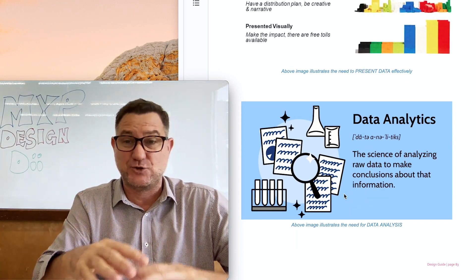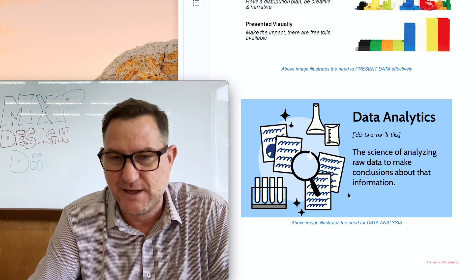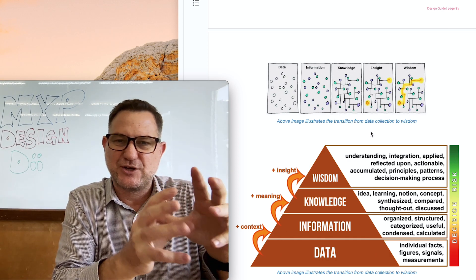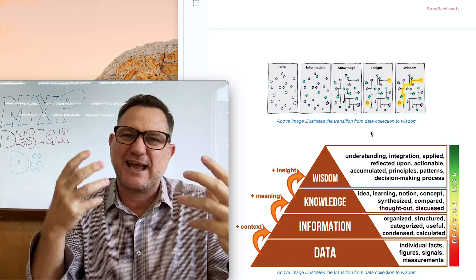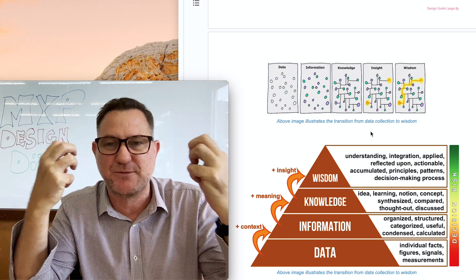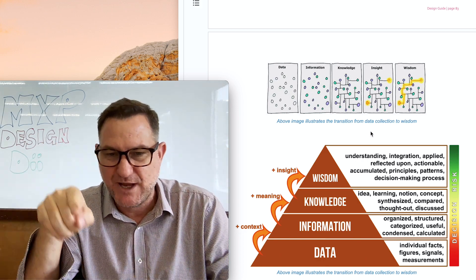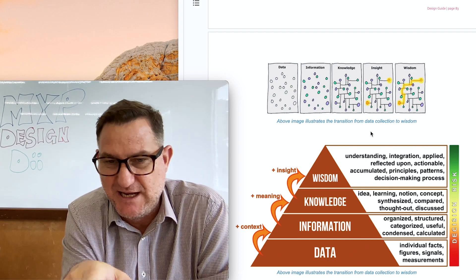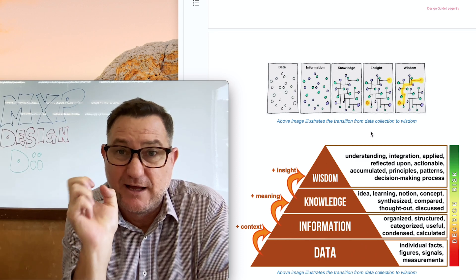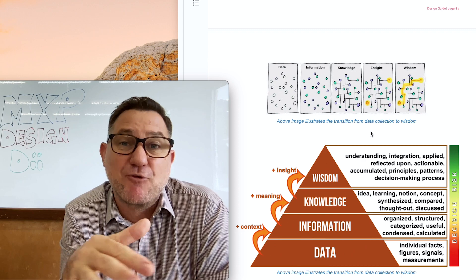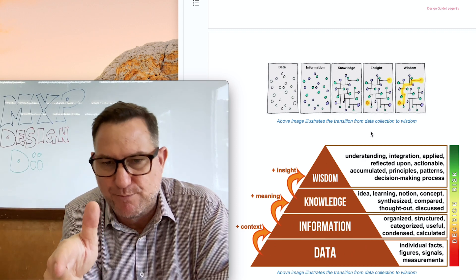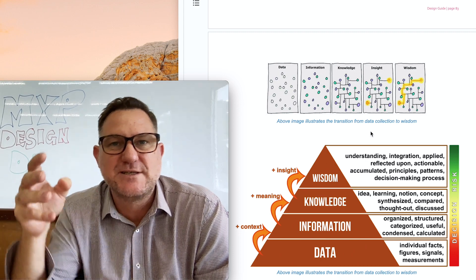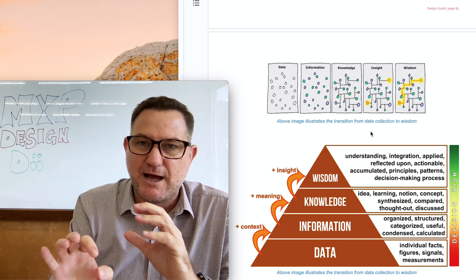Step three: once you've presented your data, you analyze it. This chart shows the progression from data to information to knowledge to wisdom — the DIKW framework. You collect the raw data, organize it to get information, build knowledge from that information, and finally gain wisdom. This is the big picture of what students do in the diploma program.